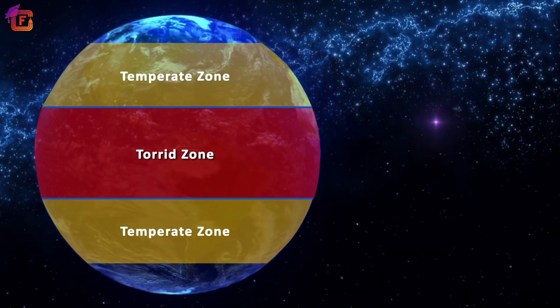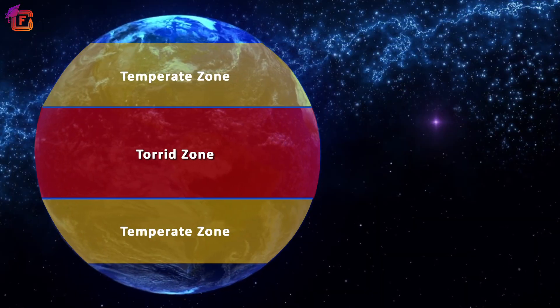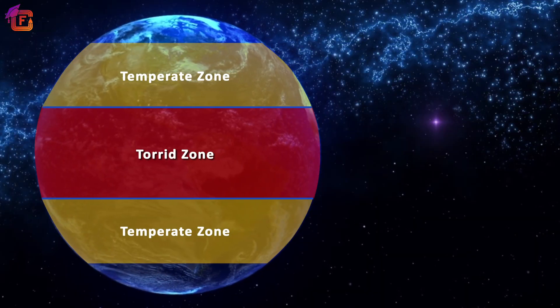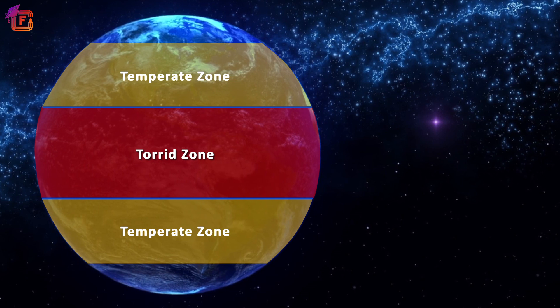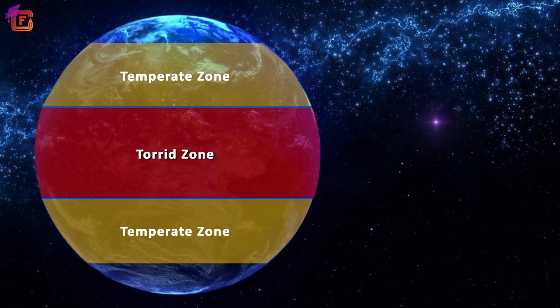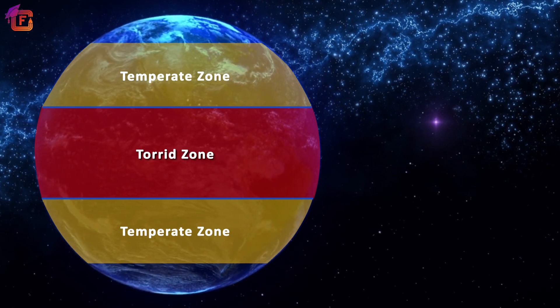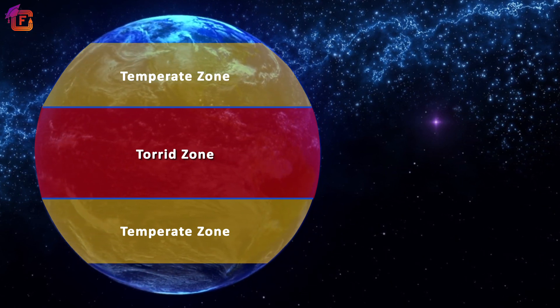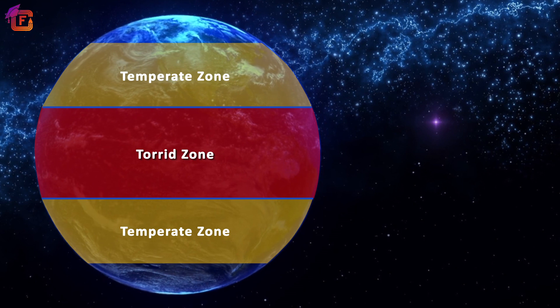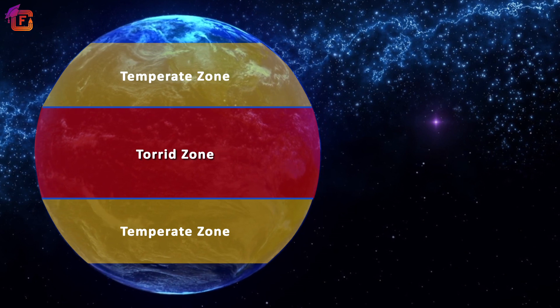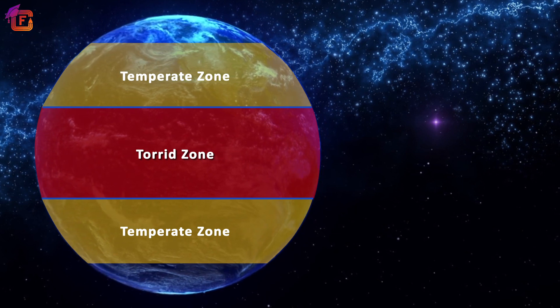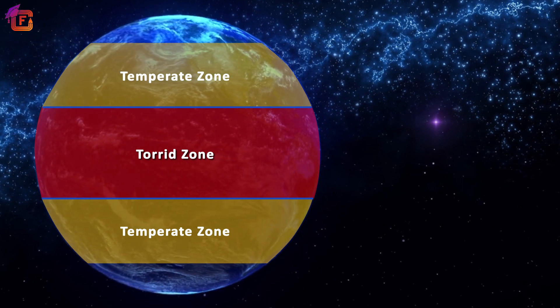Finally, we can say that the torrid zone contains areas that are the hottest places on earth. Thus, the temperature remains relatively uniform from day to night.